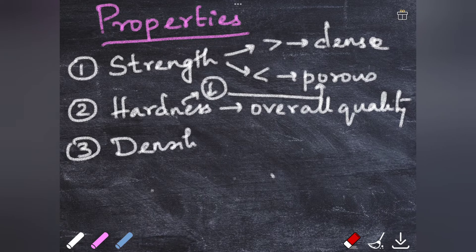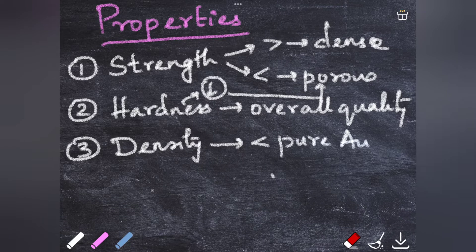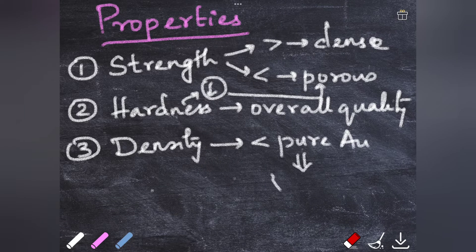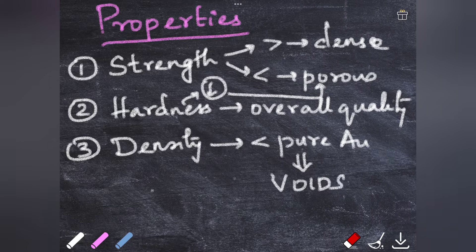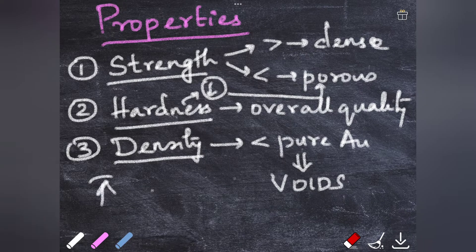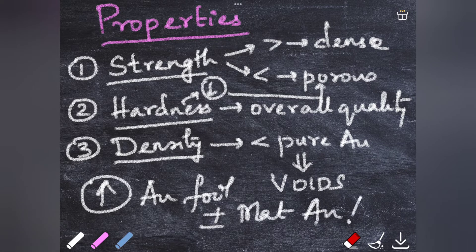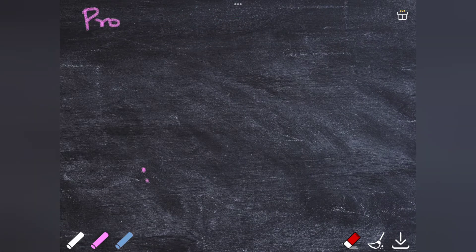The density of the direct filling gold is obviously less than that of the pure gold because you cannot completely eliminate all the voids that are present during compaction. The transverse strength, hardness, and density increases when you use gold foil with or without a matte gold.